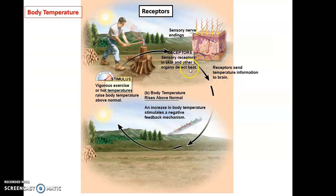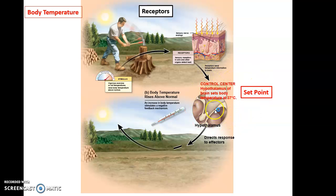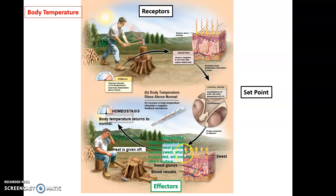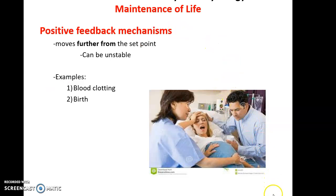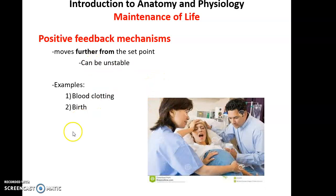With body temperature, receptors in our skin and other organs detect when body temperature is getting too high. This information goes to the control center in the brain, which compares our temperature to the ideal of 37 degrees Celsius. If we are too high — say 39 degrees Celsius — effectors respond: blood vessels in the skin dilate, increasing blood flow to the skin so heat is lost through the skin; sweat glands activate, producing sweat whose evaporation pulls heat away from the body, returning us to 37 degrees Celsius. Positive feedback mechanisms do exist but are rare because they can cause instability, moving further away from the set point.